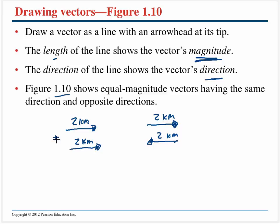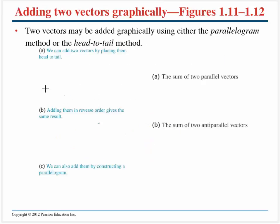What would happen if I wanted to add these vectors together? You can't just say both are equal to four. We know that if we walk two kilometers to the east and then two kilometers to the west, we end back up where we started. So let's take a look at adding vectors together. There are really two ways: the parallelogram method and the head-to-tail method.